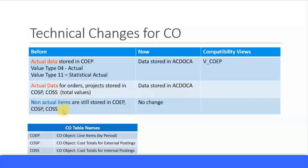Non-actual items — all statistical items — will still be stored in the COEP, COSP, and COSS tables. There is no change for these; they will not be moved to the ACDOCA table. All non-actual line items remain in the old tables.